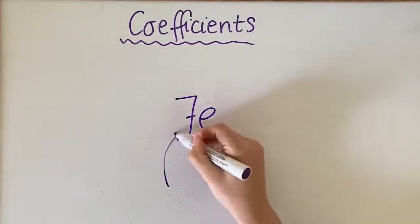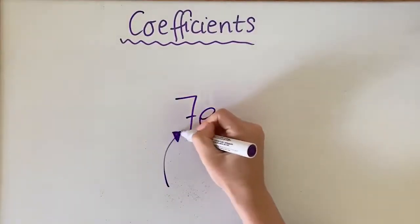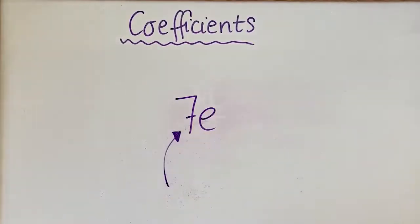So the thing to remember about coefficients: it's a number and it's the one that sits in front of a variable.